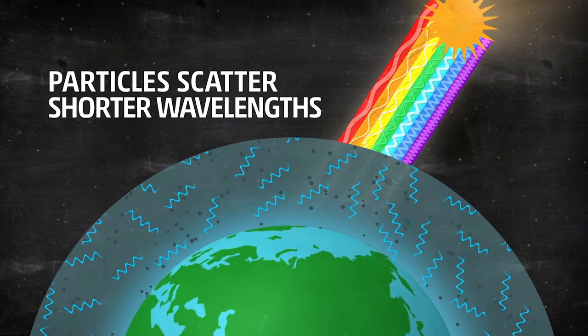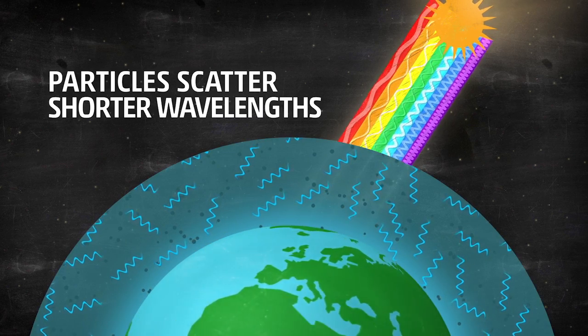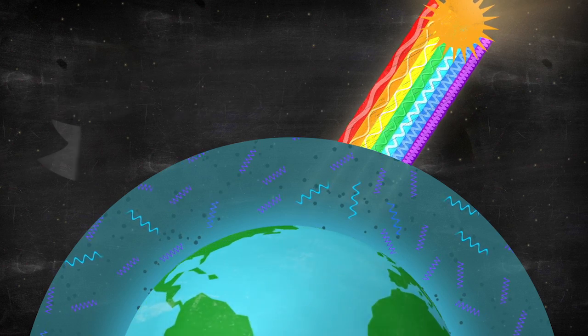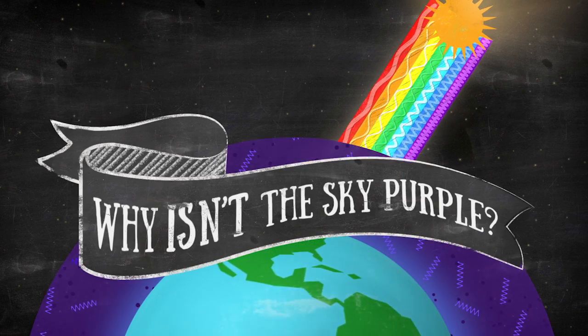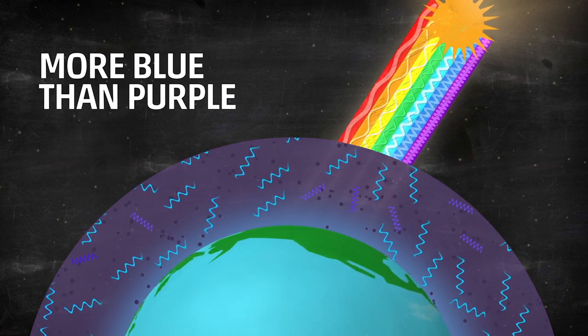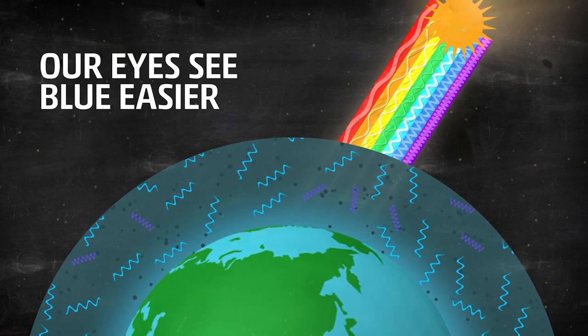directions, making the sky appear blue. But wait, if purple has a shorter wavelength than blue, why isn't the sky purple? Well, the sun sends out a lot more blue wavelengths than purple. Also, our eyes are more tuned to